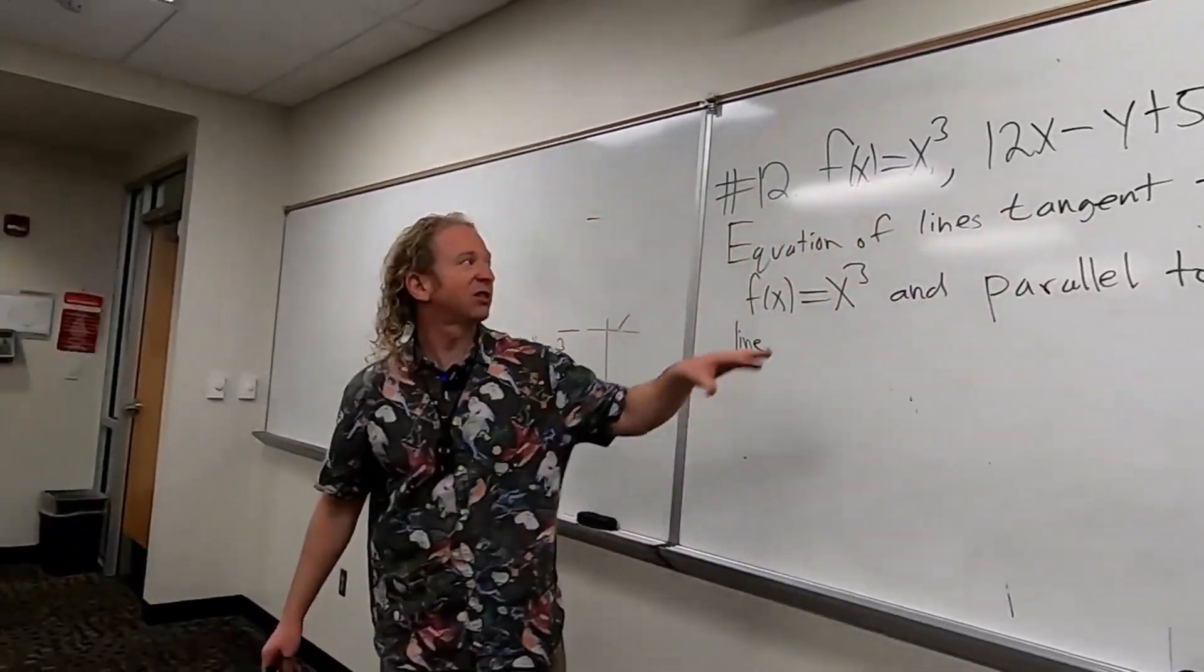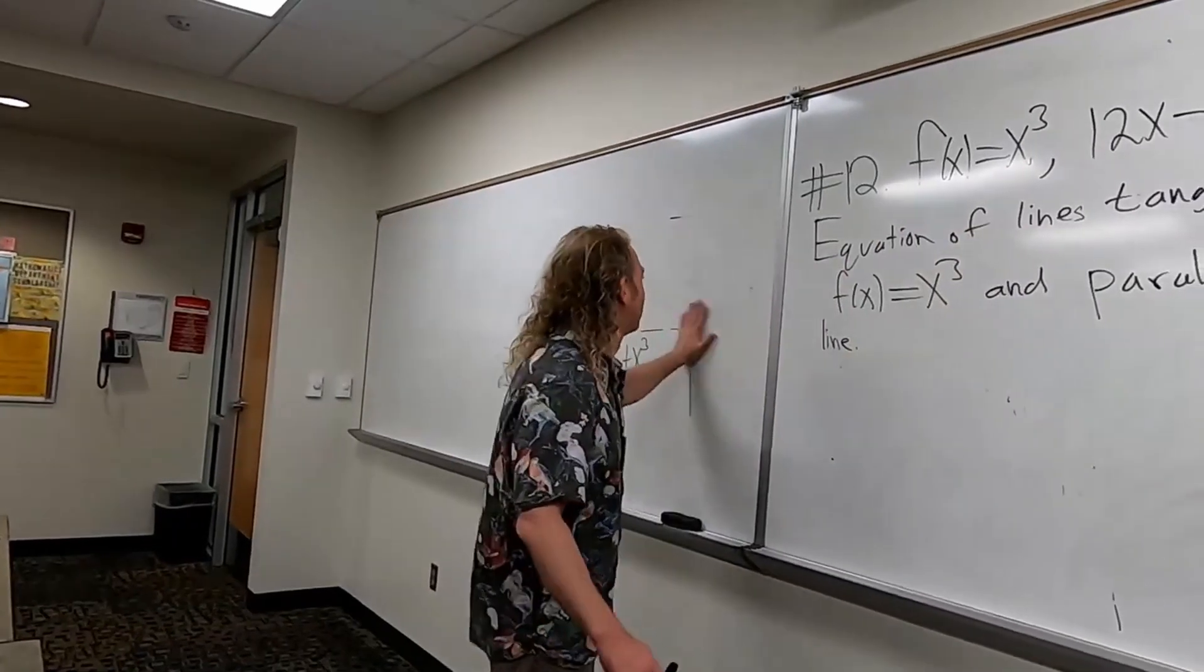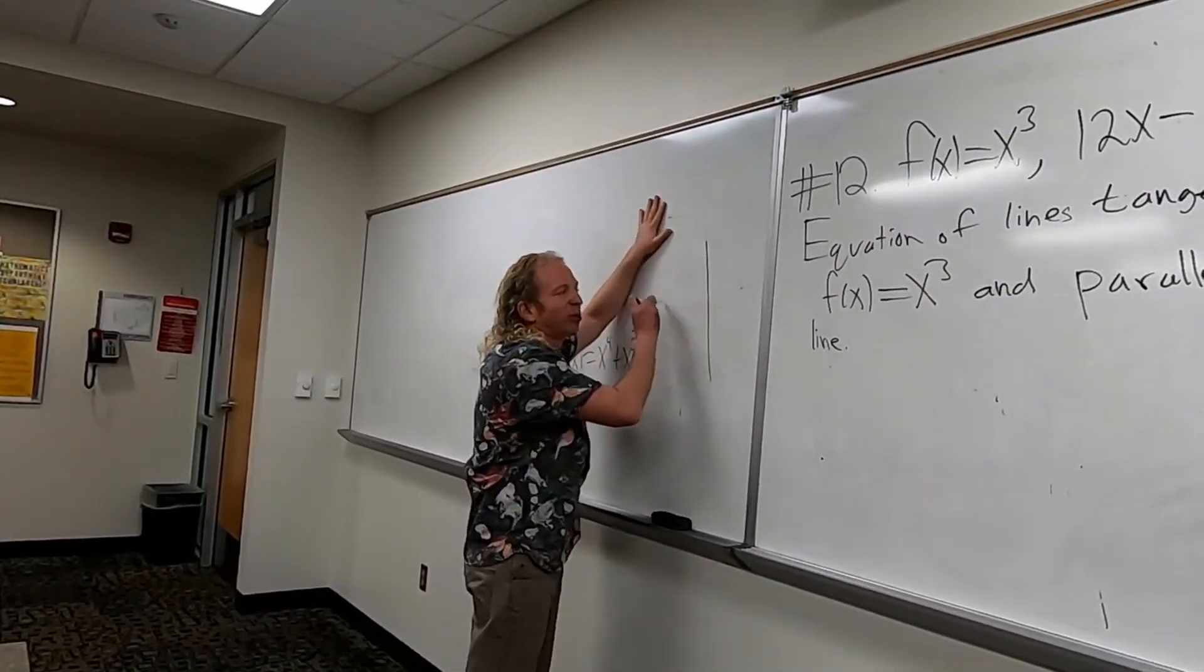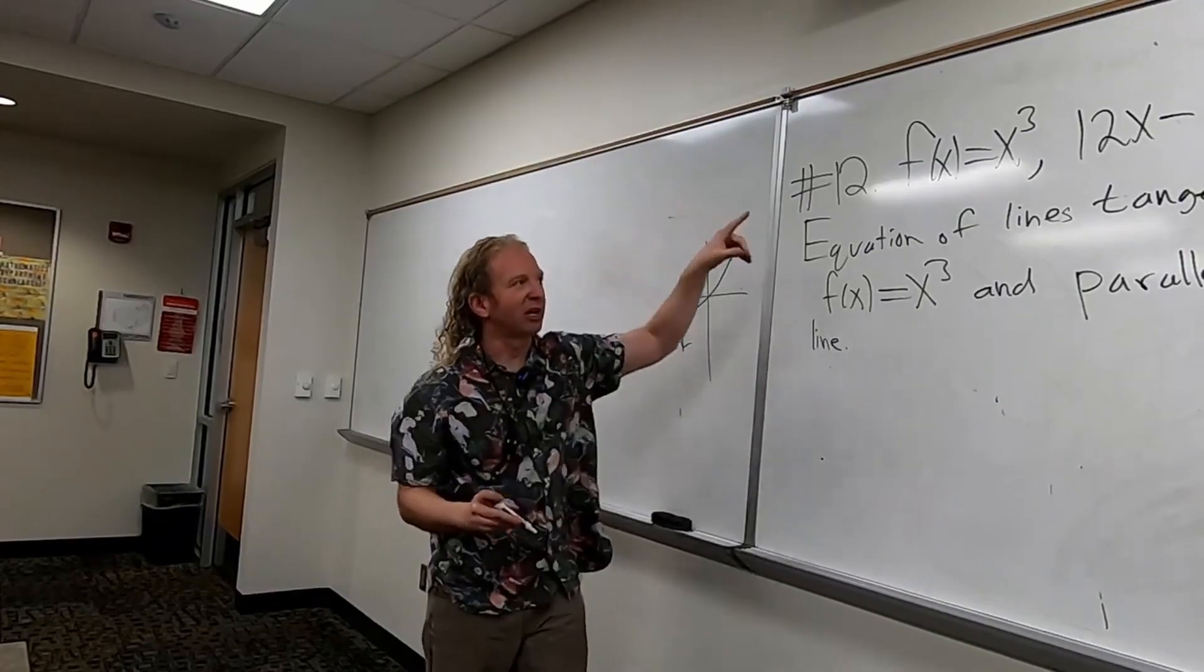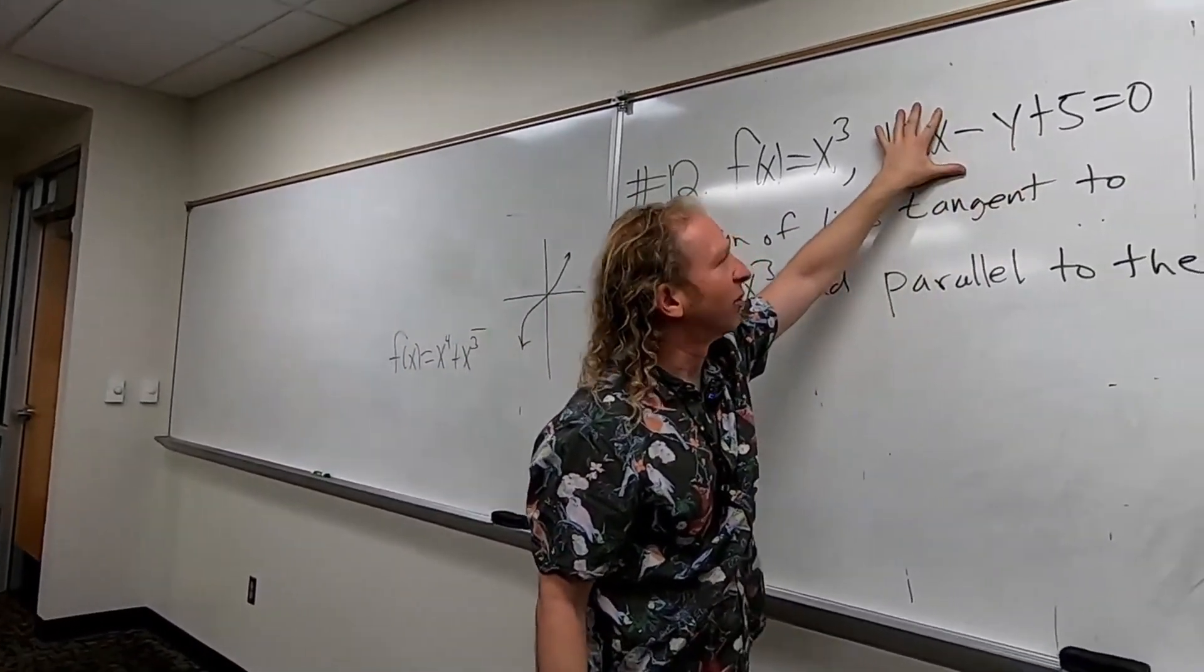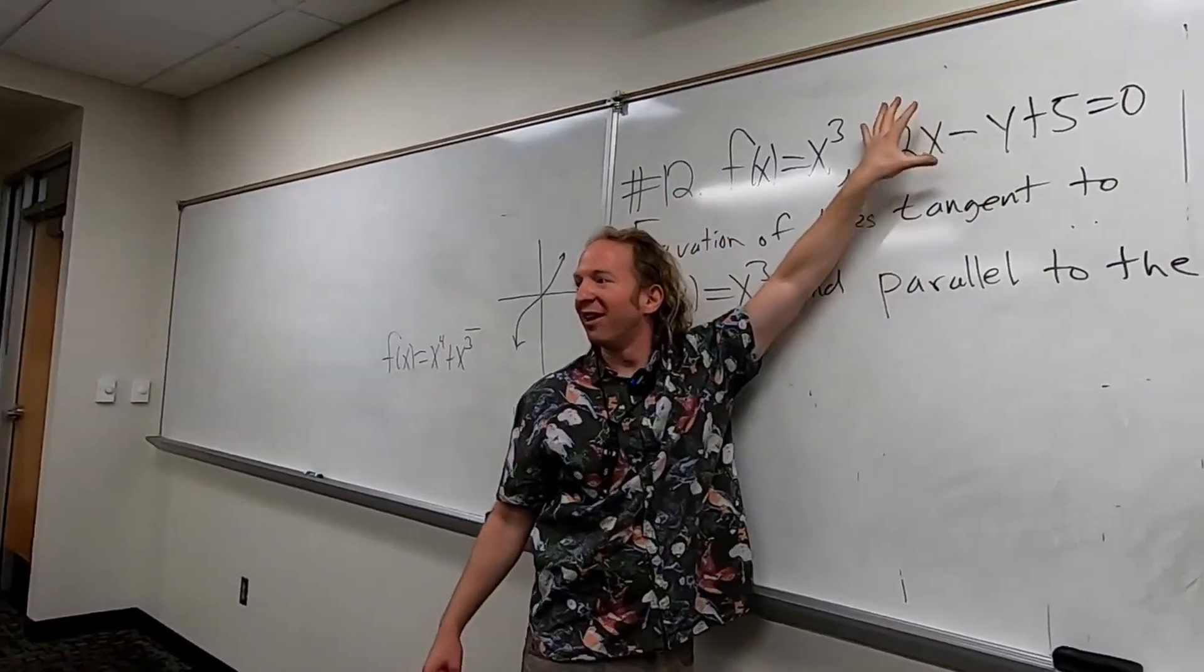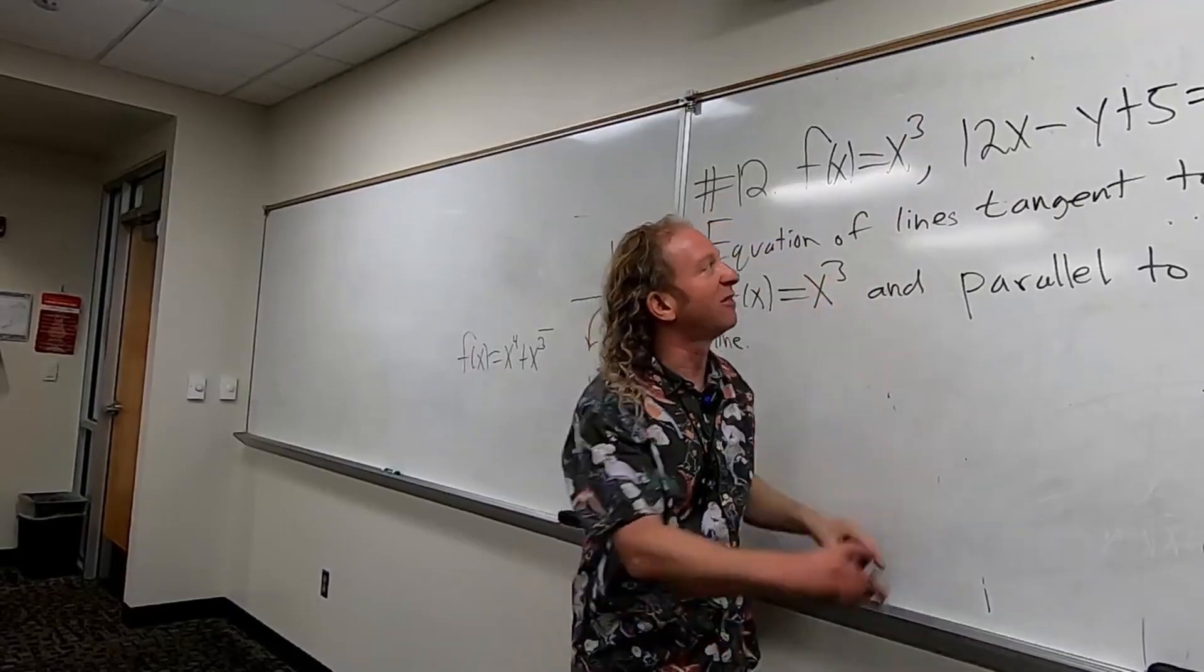There's two lines that are tangent to this function and parallel to this line. So I'll show you what they look like, because I've done this before, but x cubed looks like this. I forgot what this line looks like. I'd have to think about it. What's that? Yeah, y equals 12x minus 5.